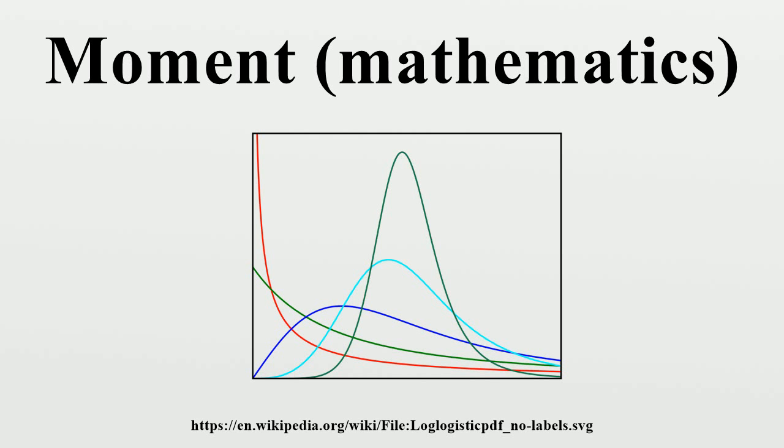Sample moments. For all k, the kth raw moment of a population can be estimated using the kth raw sample moment applied to a sample x1 through xn drawn from the population.